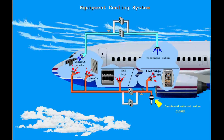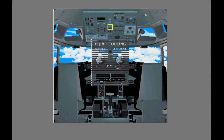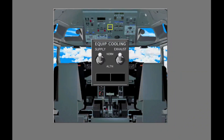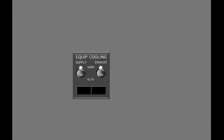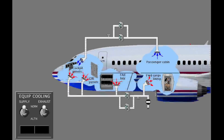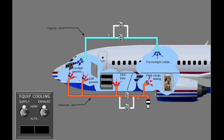In flight at a higher differential pressure, the overboard exhaust valve normally closes and the system supplies the warm air to the lining of the forward cargo bay. The controls for the equipment cooling system are on the forward overhead panel. The supply switch operates the normal or alternate supply fan. The exhaust switch operates the normal or alternate exhaust fan.